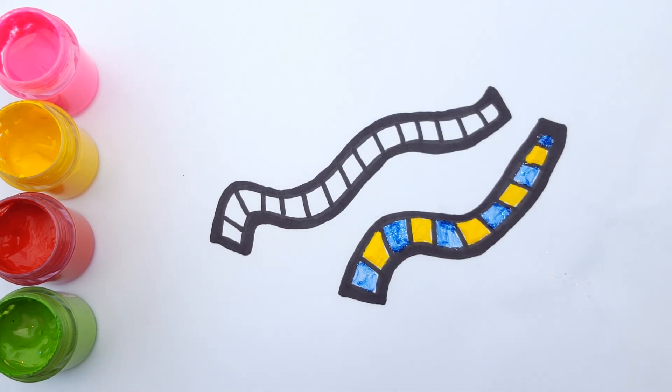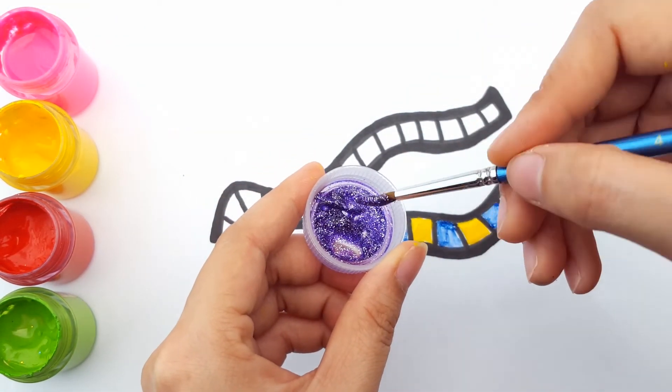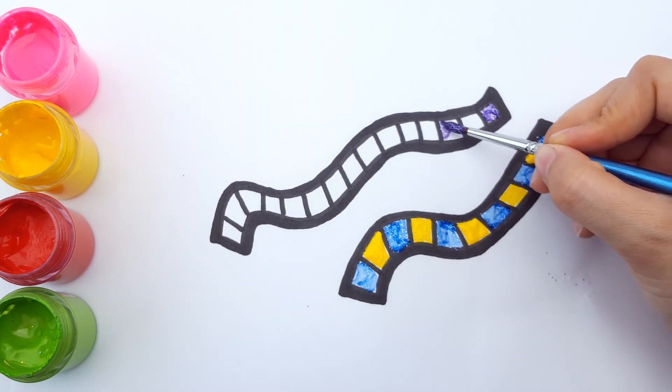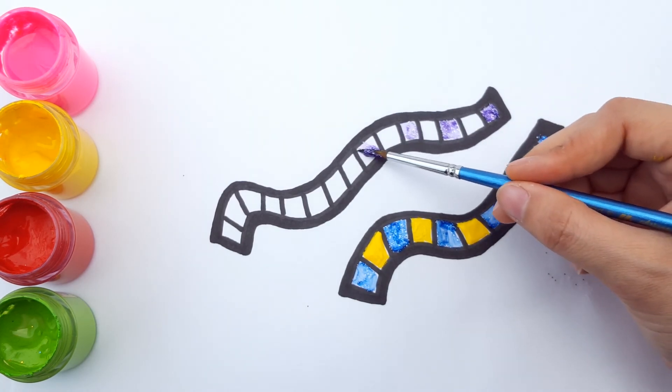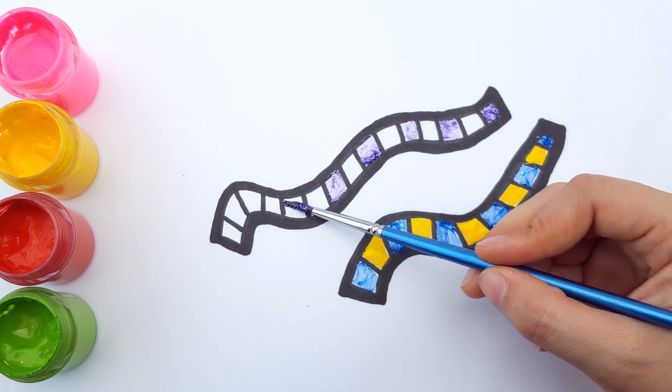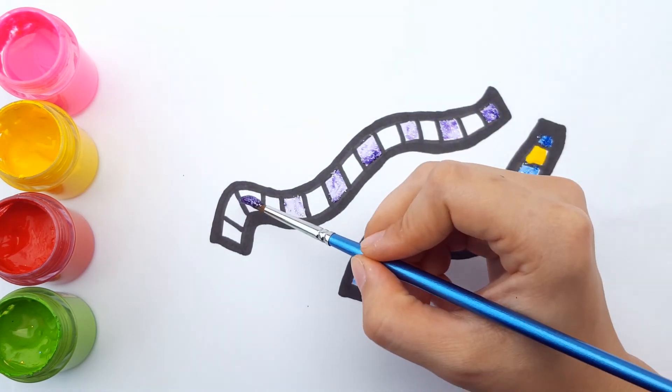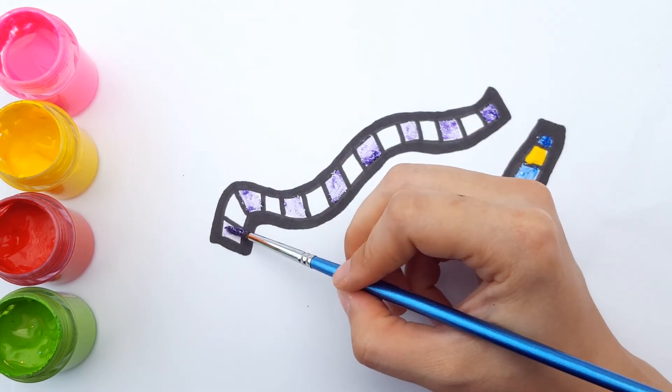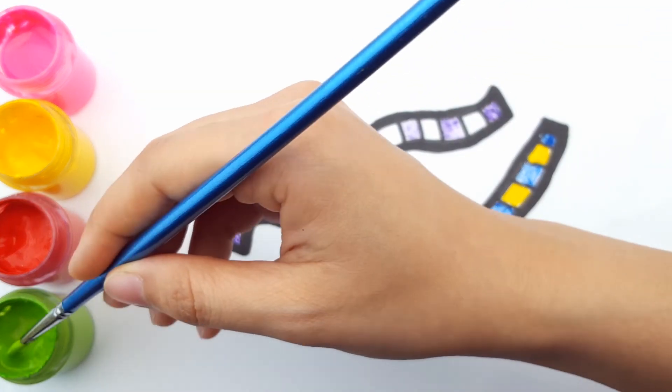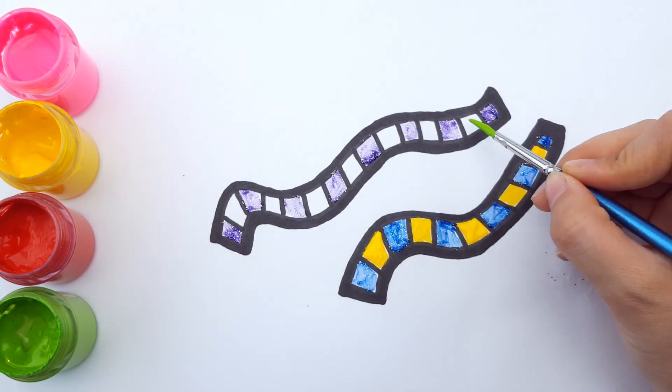For the second worm, let's use purple and add some green for the rest of the worm.